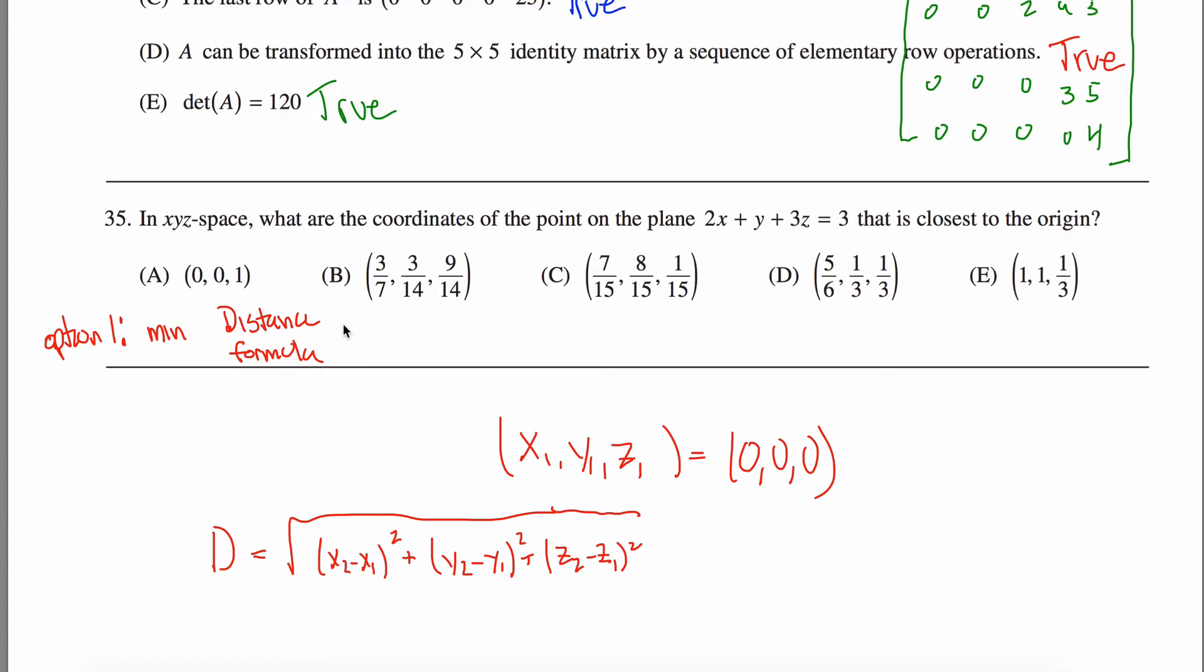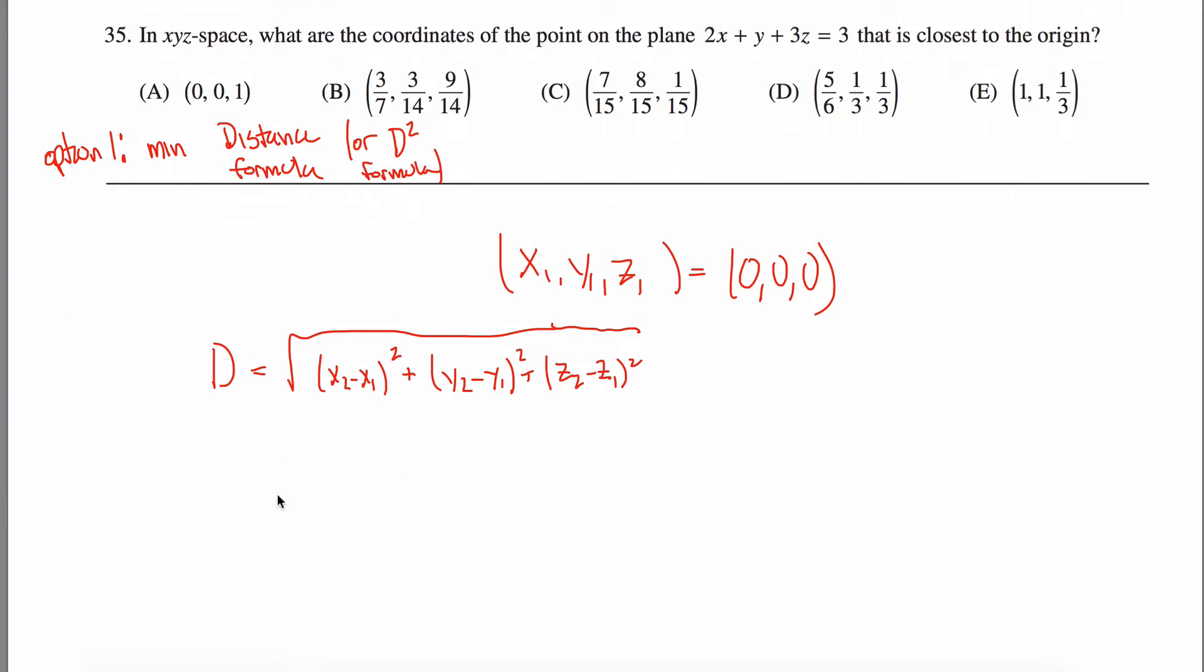You could minimize the distance formula or the distance squared formula would make more sense. So if I want this thing to be as small as possible, that's equivalent to making this thing as small as possible.